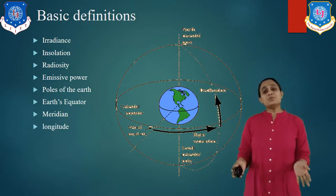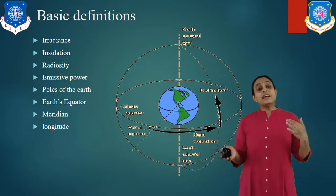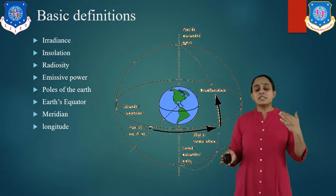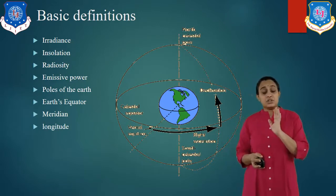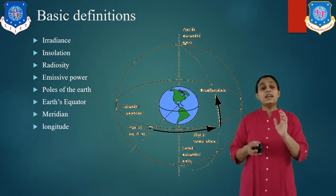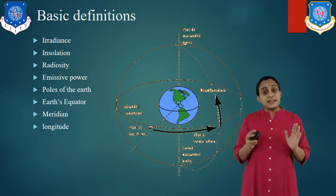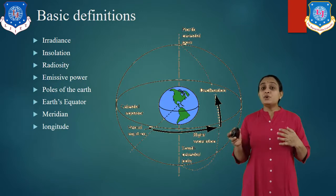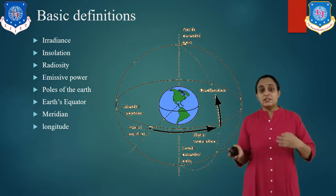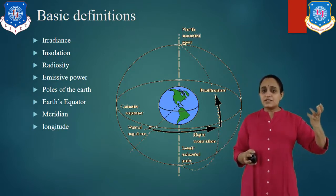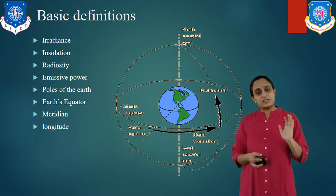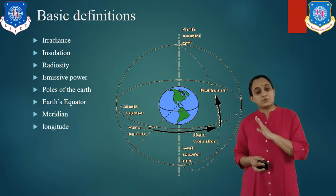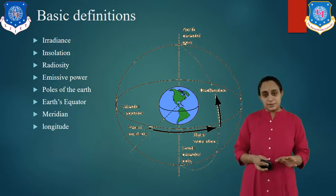Now let us move to our third definition: radiosity. The rate at which radiant energy leaves the surface per unit area — by combined emission, reflection, and transmission — is known as radiosity.